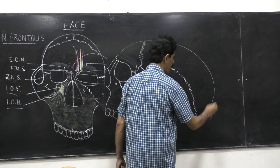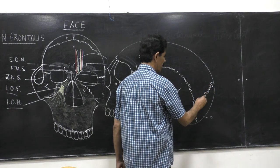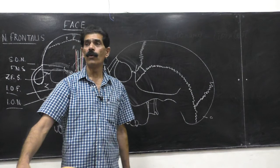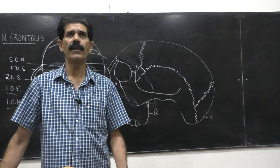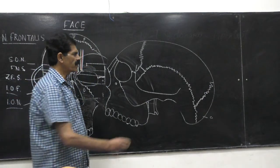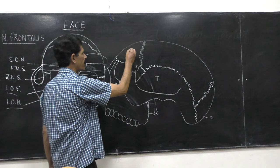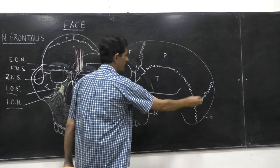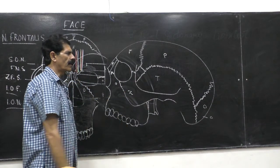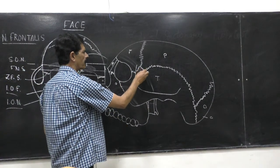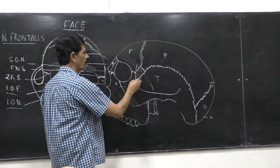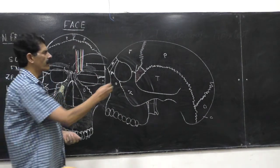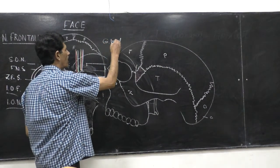The bones visible in the norma lateralis are: the frontal bone, the nasal bone, the maxillary bone, the zygomatic bone, the parietal bone, the occipital bone, and the temporal bone. One more small bone is visible here — mostly lying intracranially, but a small part comes out — this is called the greater wing of the sphenoid bone.